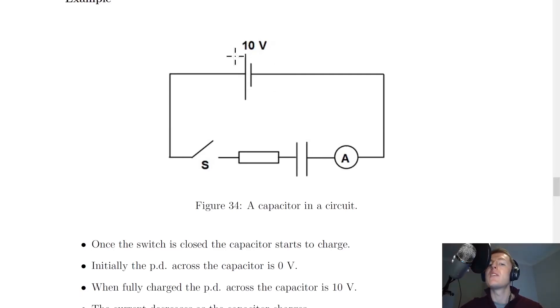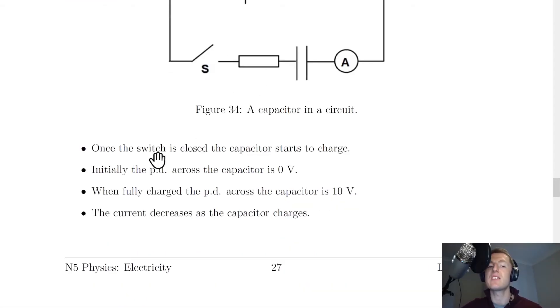So when the voltage across the capacitor is 10 volts, the voltage across this resistor here would be zero volts, because the capacitor has taken the full voltage from that supply. And the current decreases as the capacitor charges.